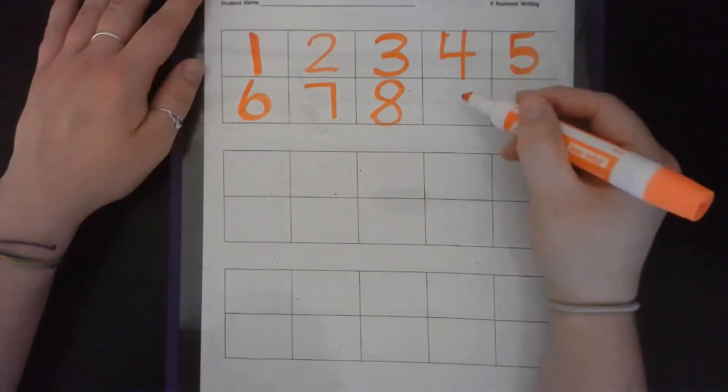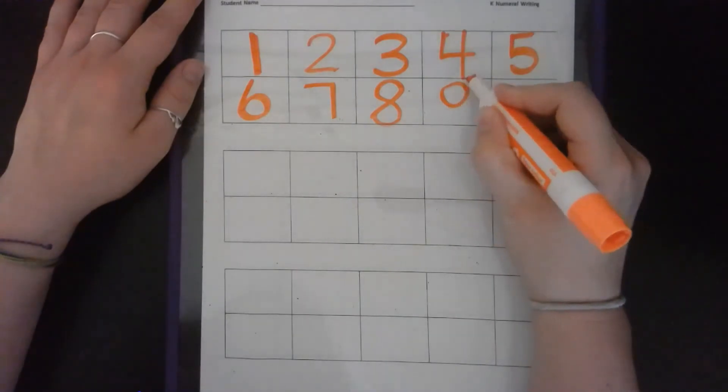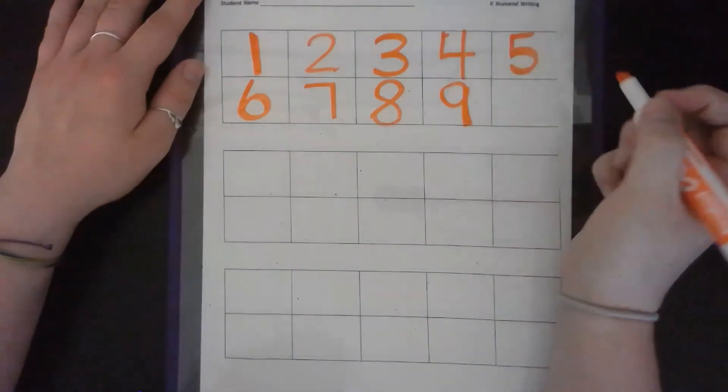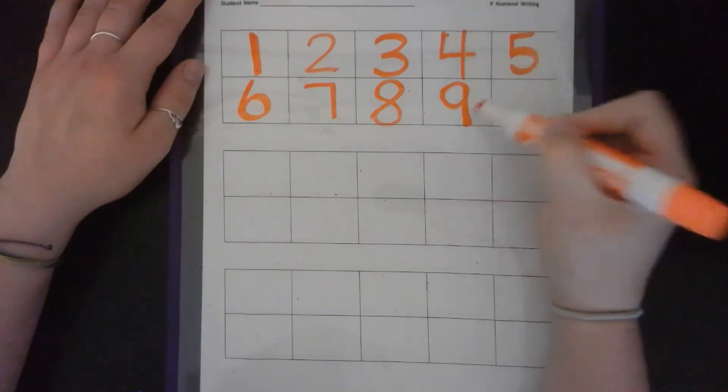Our next number is a nine. Make sure we do a loop, then a line. That's the way you make a nine. So, a loop, then a line.